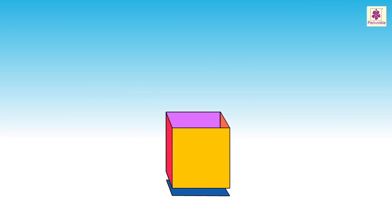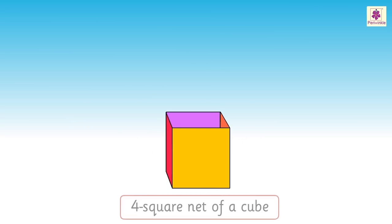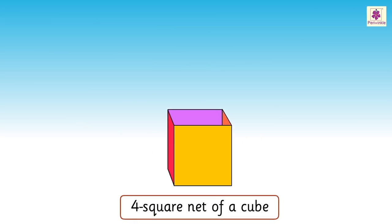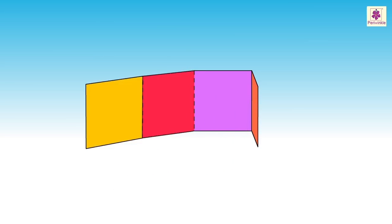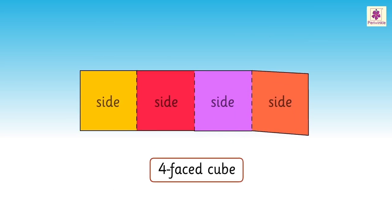Lastly, remove the bottom part also. We get a four-square net. It is a four-faced cube.